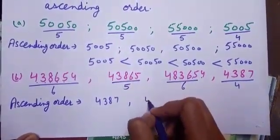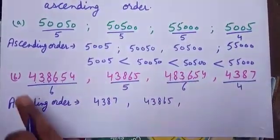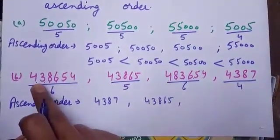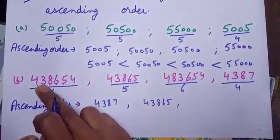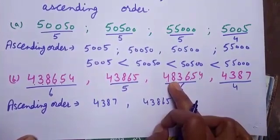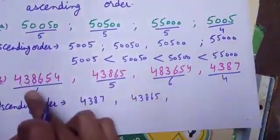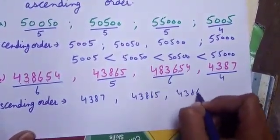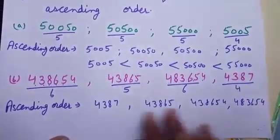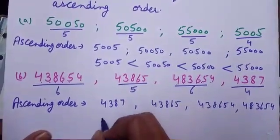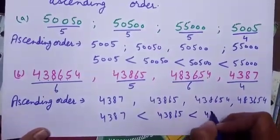Then I want to compare these two 6-digit numerals. The digit at the 100 place is the same. Then I will compare the digit which is at the 10,000 place. Here, 3 is at the 10,000 place, and here it is larger at the 10,000 place, meaning this numeral is the largest among them. So I will write this numeral last, then the other one. Ascending order means smallest to the greatest. You can also write it using this symbol.